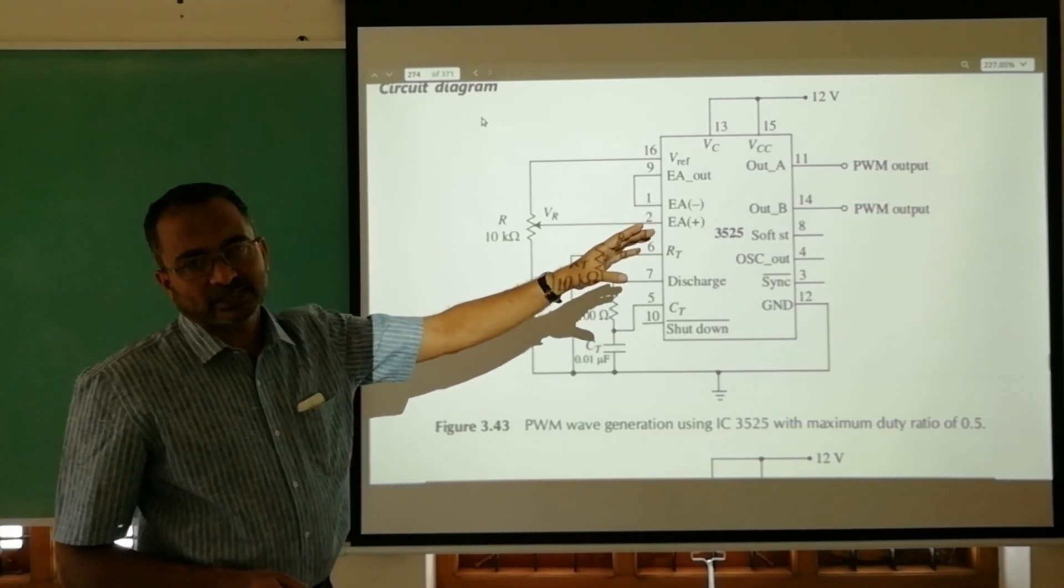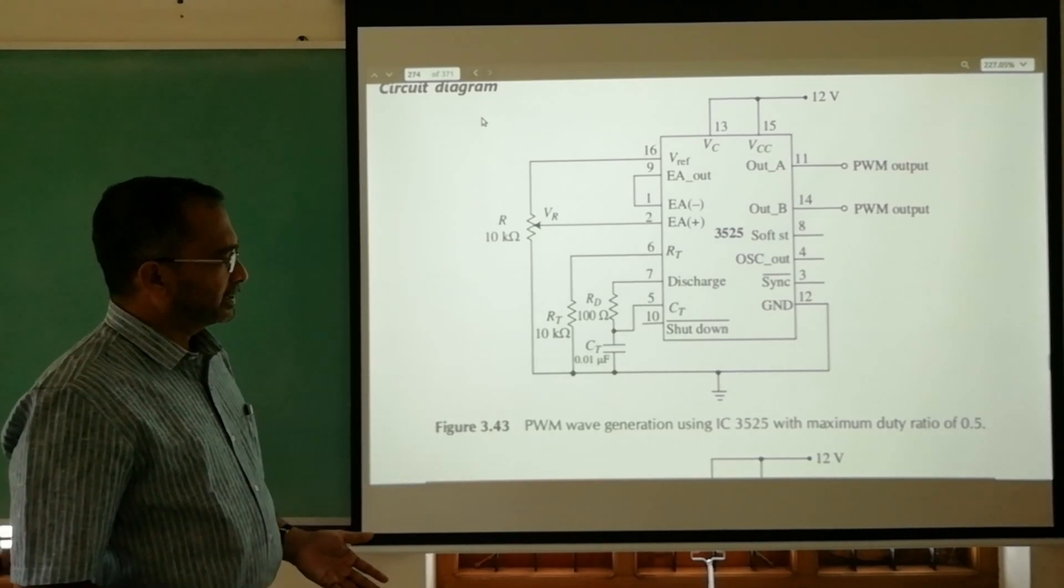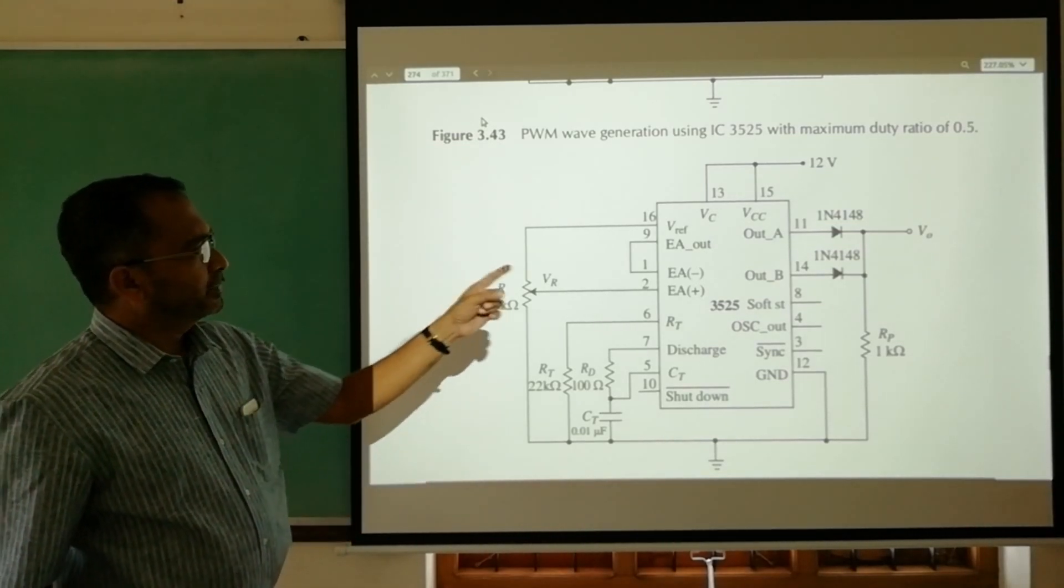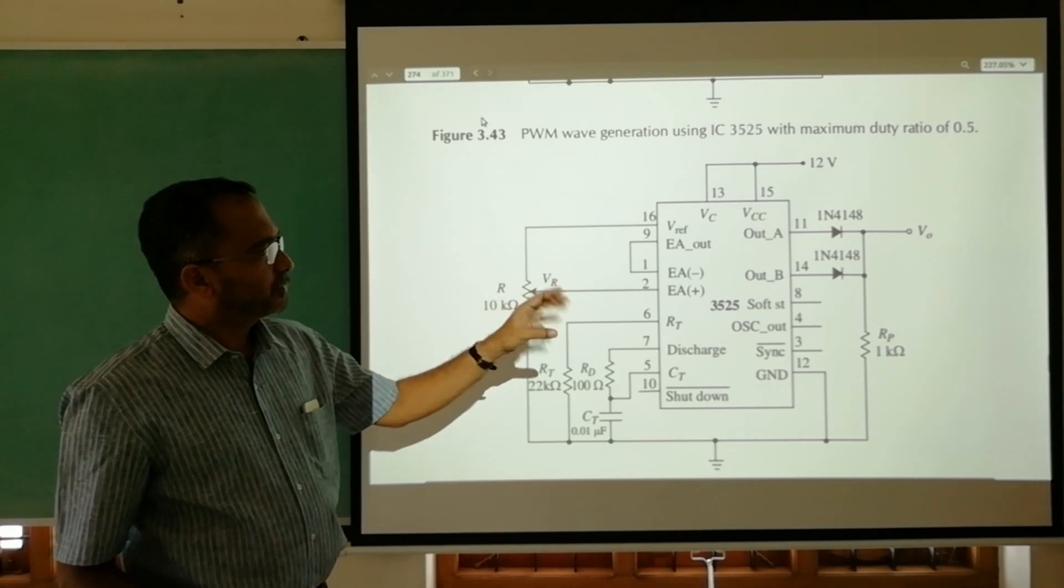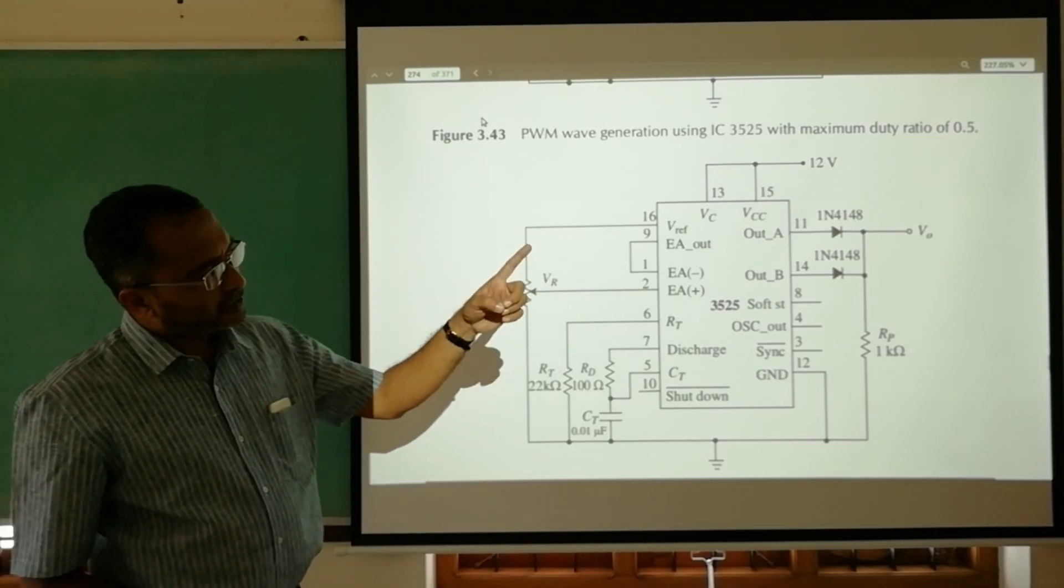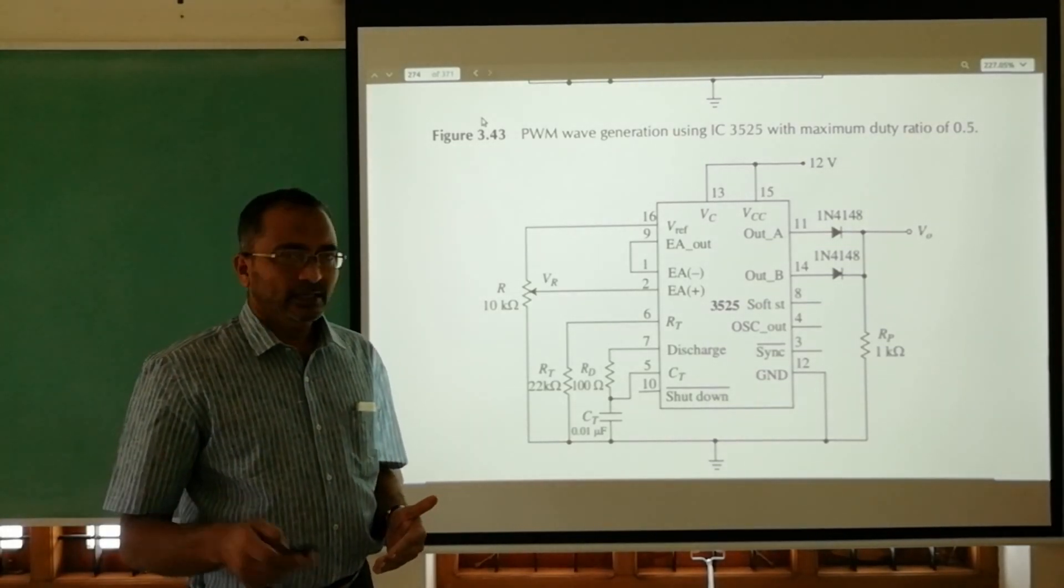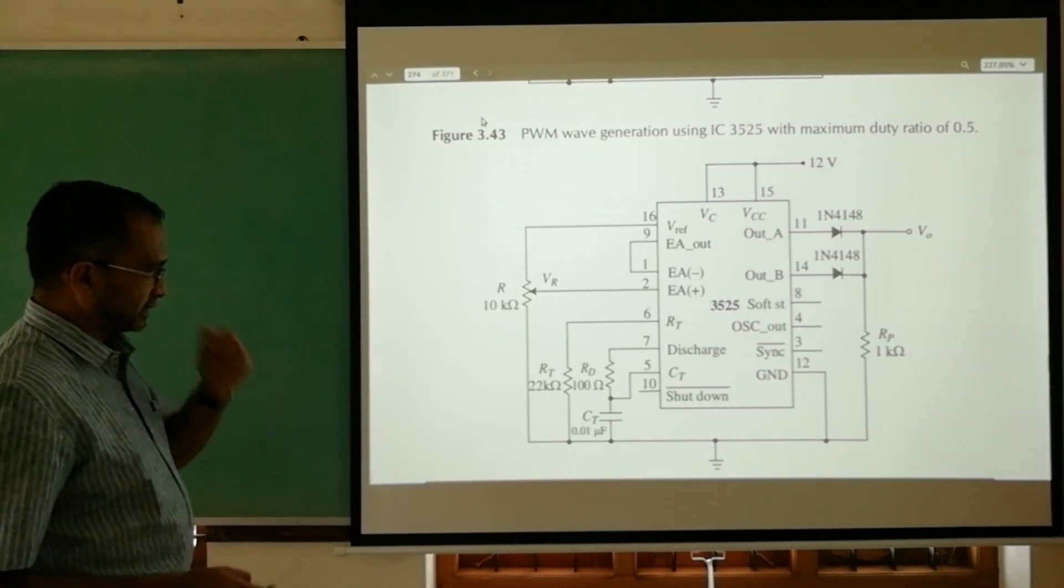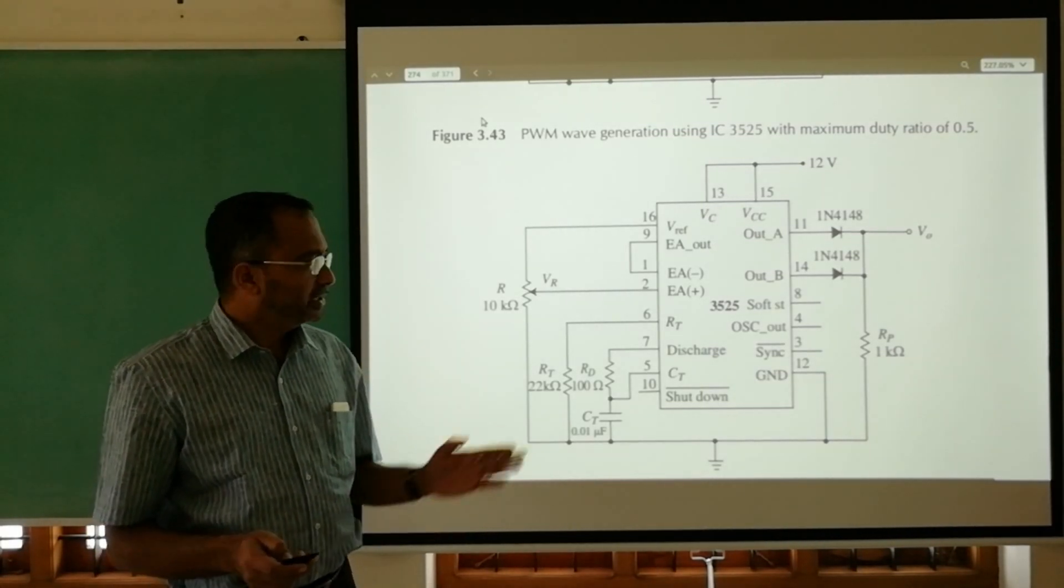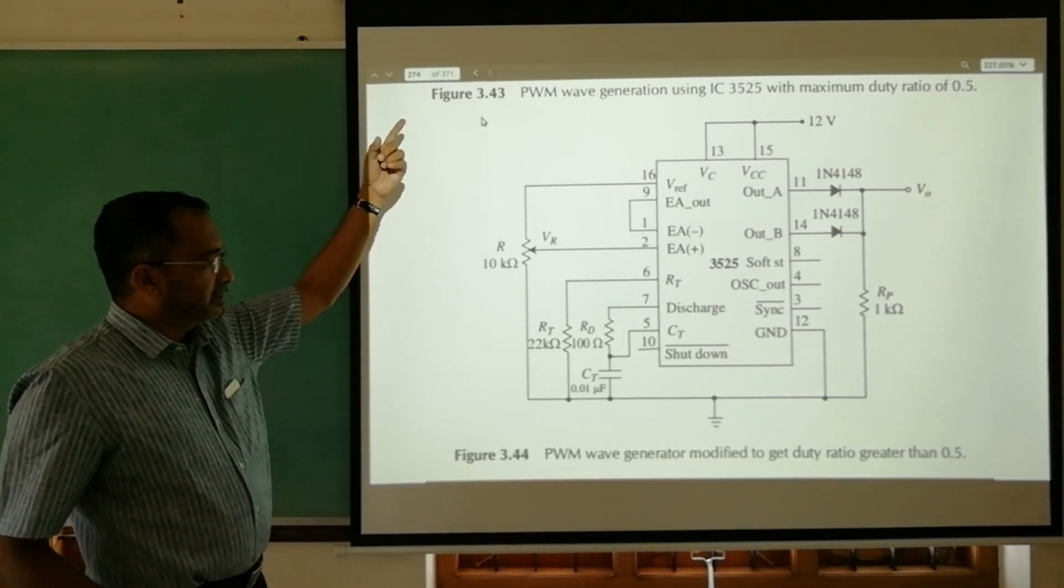In some cases we need duty cycle more than 0.5. In that case we connect two diodes and a resistor at the output, just like in our circuit in digital logic. Pin number 11 and 14 provide these two waveforms, but VO now derived from waveforms at 11 and 14 will have more than 0.5 duty cycle, less than one. When we need a single PWM output with greater than 0.5 duty cycle, we can use this modified PWM waveform generator.